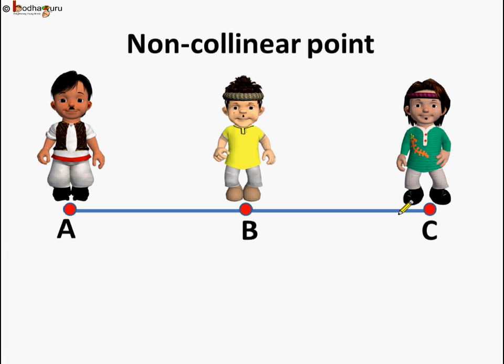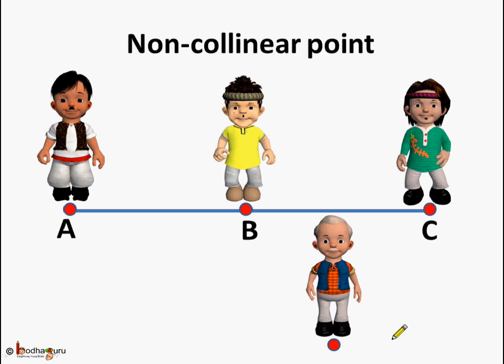Now, their father came and he stood on this point. So, he is not standing on this straight line. He is out of the straight line. So, the points that do not lie on the same line are called non-collinear points. Here, point A, B, C and D are non-collinear because D is not in the same line as the other three. But, we can say point A, B, C are collinear points as they are in the same straight line. Understood?